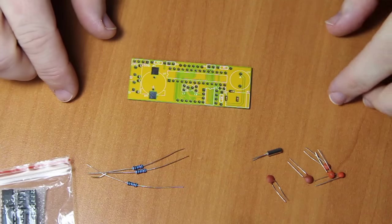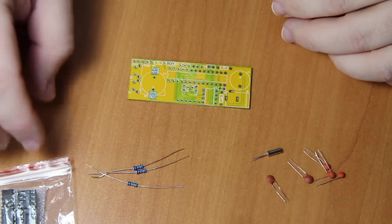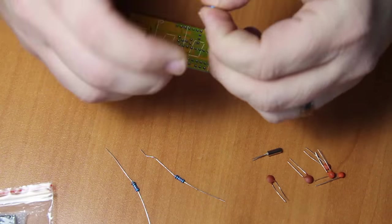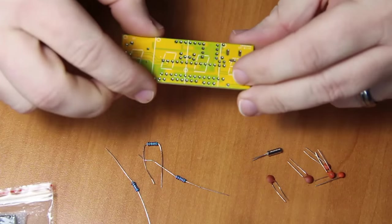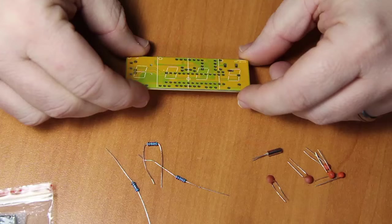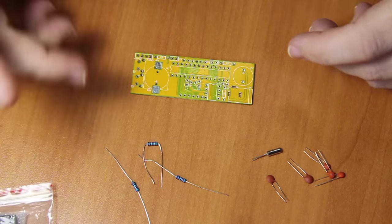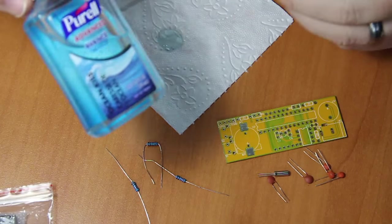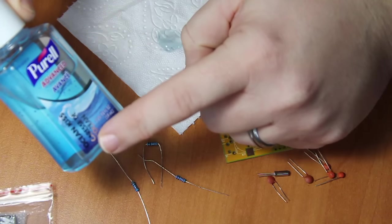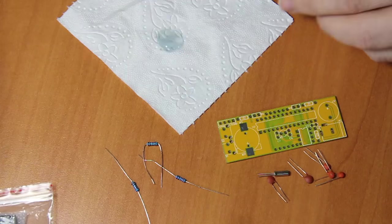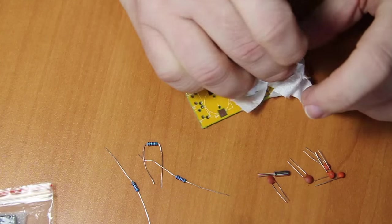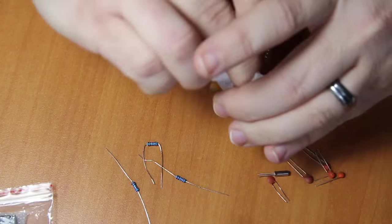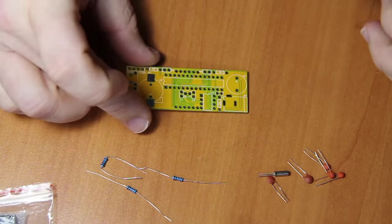Generally you want to solder this together starting with the shortest or lowest components, like resistors, so that when you put them through the board you can turn it upside down and have the legs coming through. This board looks pretty clean. I'm just going to clean it with some Purell alcohol to get any fingerprints or oil off the board. You want to use the Ocean Kiss smell because that's obviously best for soldering.